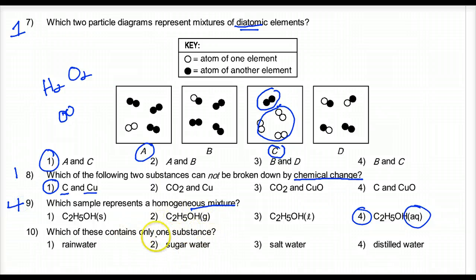And ten. Which of these contains only one substance? A substance is a compound or an element. Salt water is a mixture. It's made up of salt and water. Two different compounds. Distilled water. That means we boiled off the water and collected the pure water. That's our winner. That's a compound. Sugar water is two substances. And rain water is a mixture of all kinds of stuff.